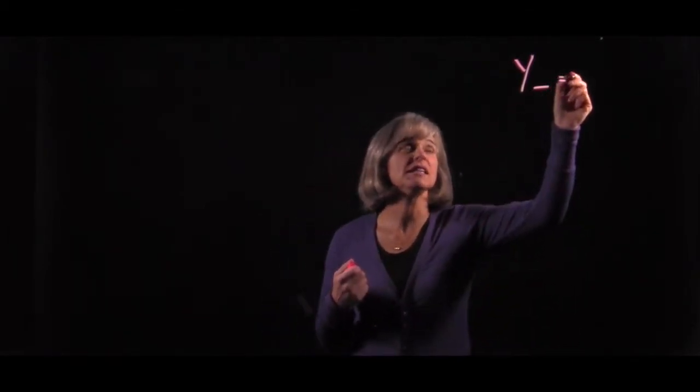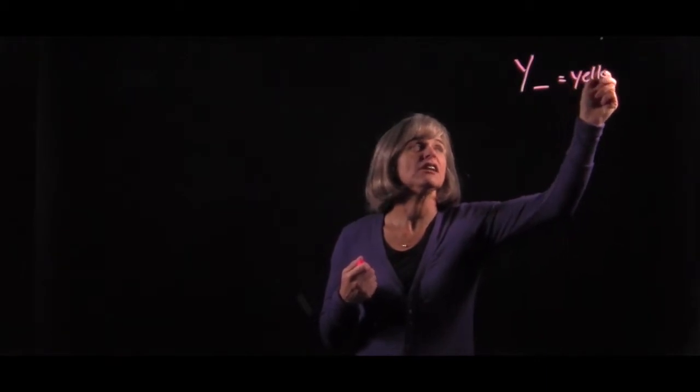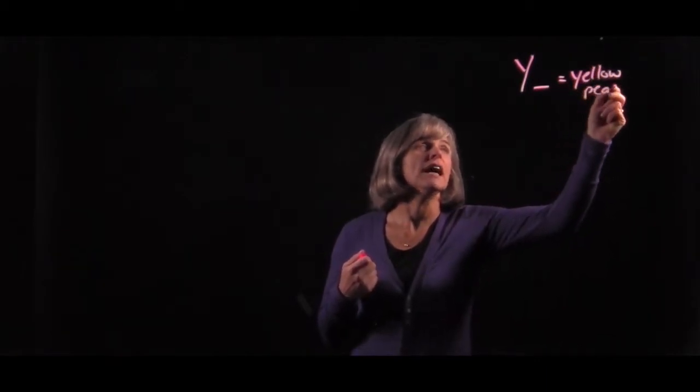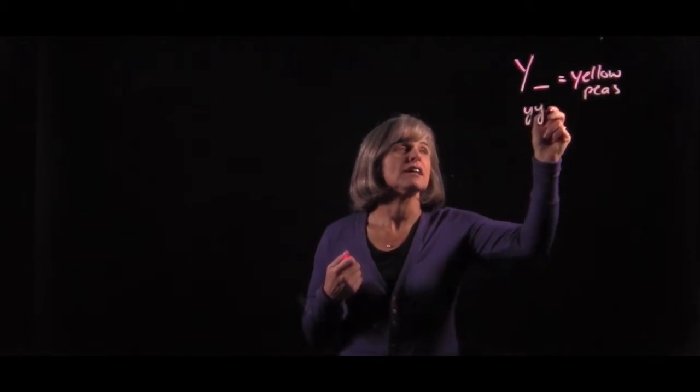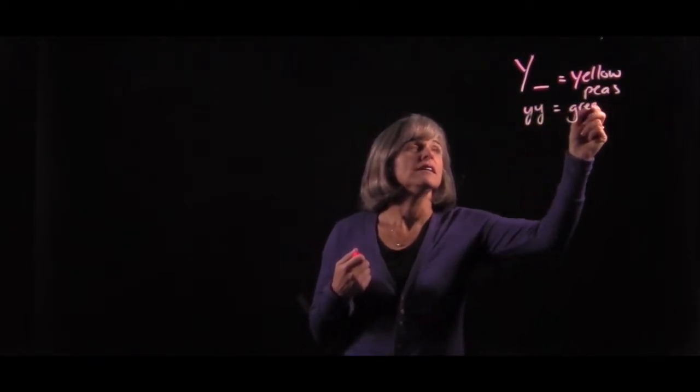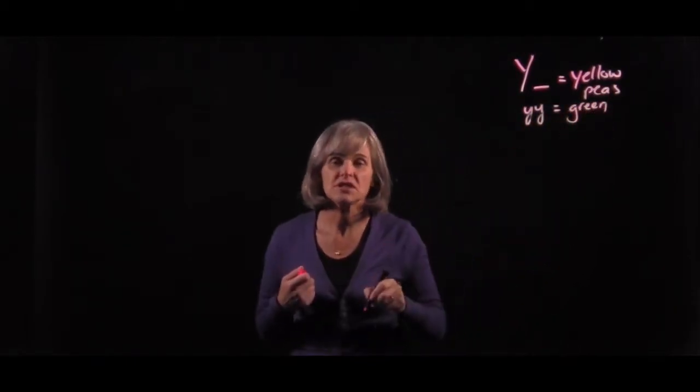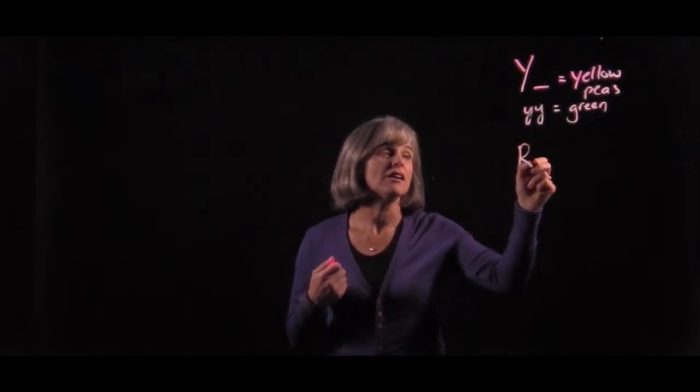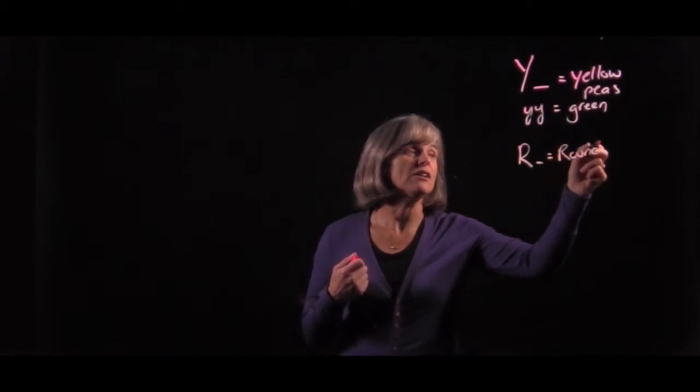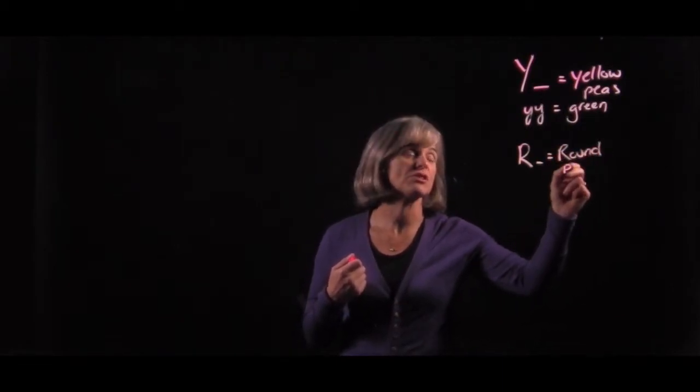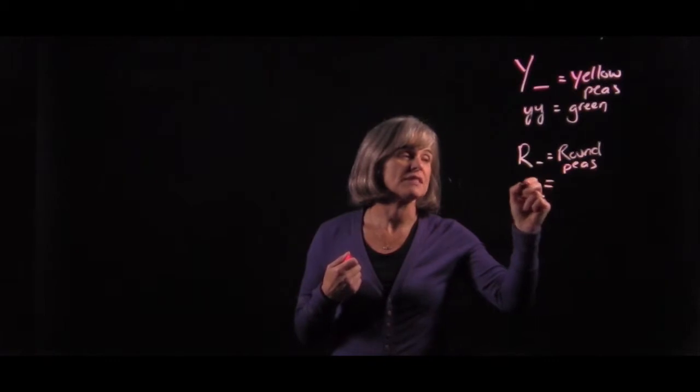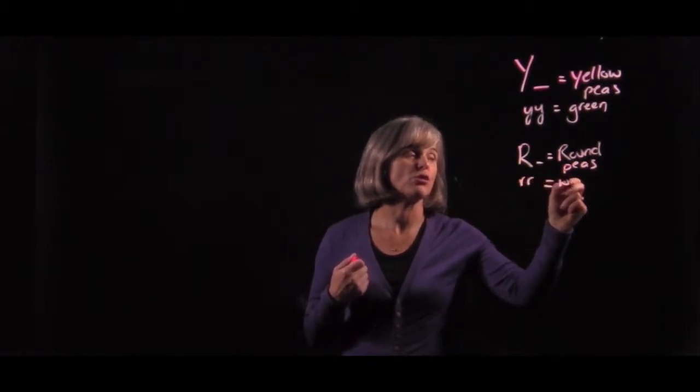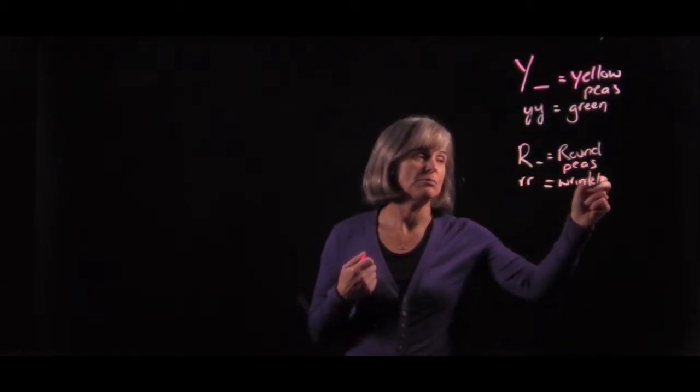One locus, Y, was responsible for pea seed color with the dominant allele giving us yellow peas, the recessive allele giving us green peas. On another chromosome, a locus that we call R was responsible for the dominant allele for round pea seed shapes, and the recessive allele responsible for wrinkled pea seeds.